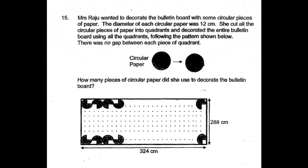Mrs. Raju wanted to decorate the bulletin board with some circular pieces of paper. The diameter of each circular paper was 12 centimeters. She cut all the circular pieces of paper into quadrants and decorated the entire bulletin board using all the quadrants following the pattern shown below. There was no gap between each piece of quadrant.